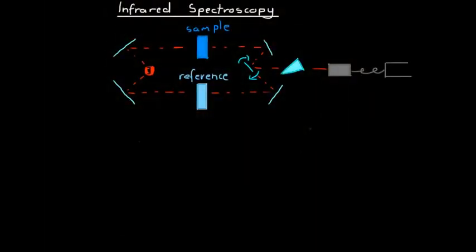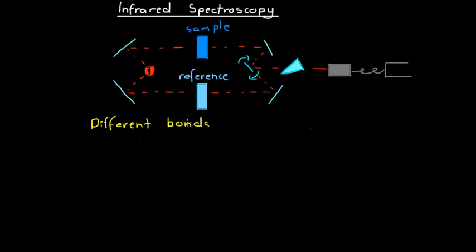Infrared spectroscopy makes use of the fact that when we talk about the molecular vibrations of a molecule, different bonds absorb different amounts of energy — they absorb different energies. So that is the key to infrared spectroscopy. Molecules can be excited so that they're vibrating in lots of different ways, and they do that by absorbing energy from infrared light.